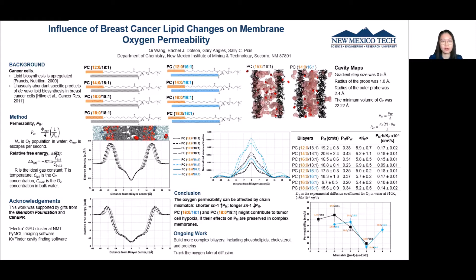If de novo lipids are the reason why oxygen permeation decreases, forming hypoxia in tumor cells, modifications of the lipid membrane might be the solution to change hypoxia and make radiotherapy more extensive and lethal to tumor cells.